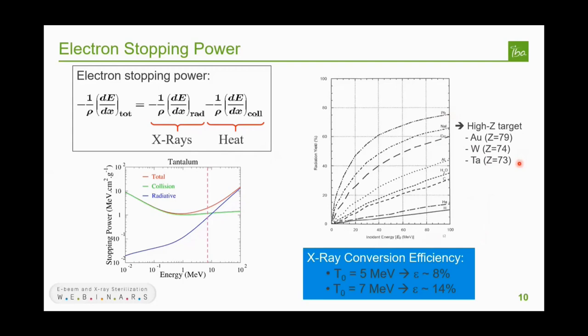Unfortunately, in industrial irradiation processes we are limited to 5 or 7 MeV for electron energy. At these energies, the yield of x-ray emission is still rather low. At 5 MeV we obtain a conversion efficiency of about 8%, and at 7 MeV it is about 14%. That means all the rest is transformed into heat inside the target.